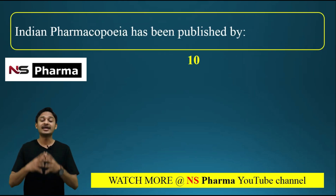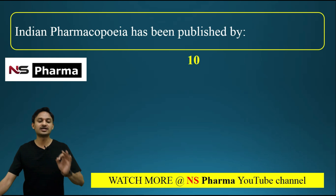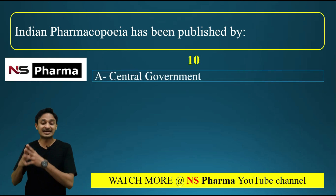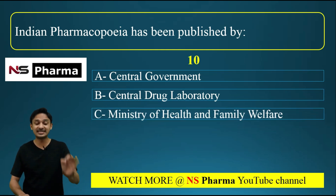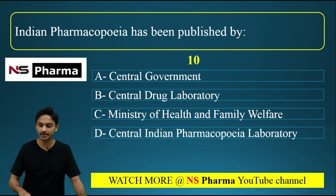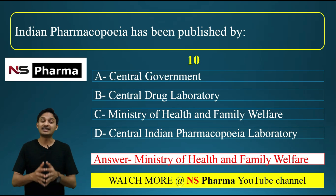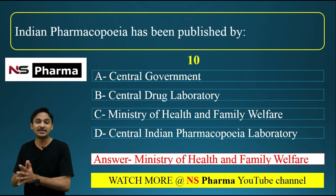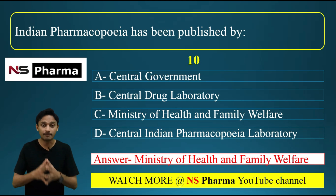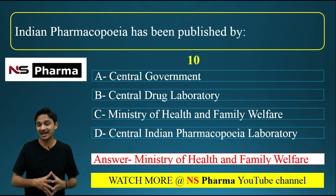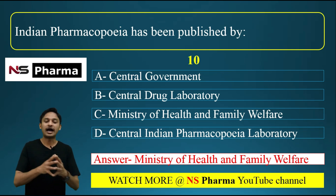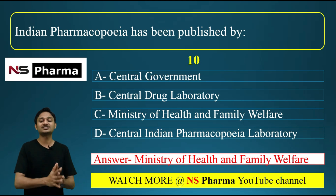Question number 10: Indian Pharmacopoeia has been published by — options are: A) central government, B) Central Drug Laboratory (CDL), C) Ministry of Health and Family Welfare, D) Central Indian Pharmacopoeia Laboratory. The correct answer is option C: the Indian Pharmacopoeia (IP) is published by the Indian Pharmacopoeia Commission (IPC) on behalf of the Ministry of Health and Family Welfare.